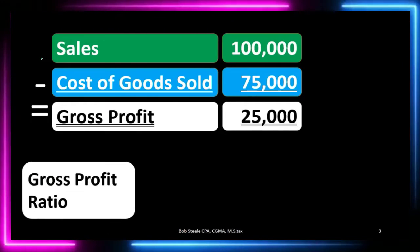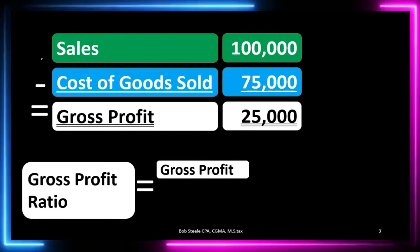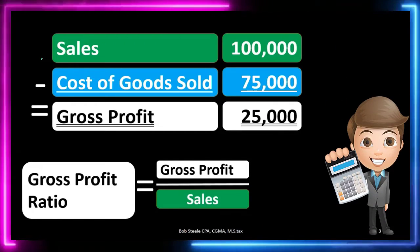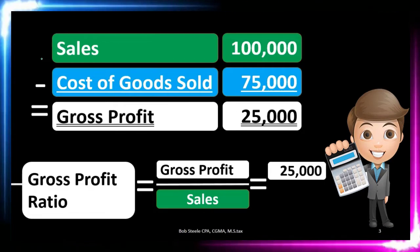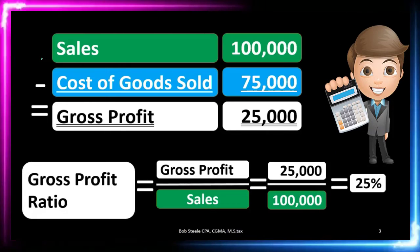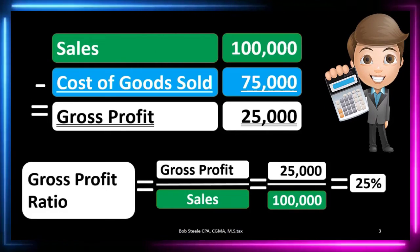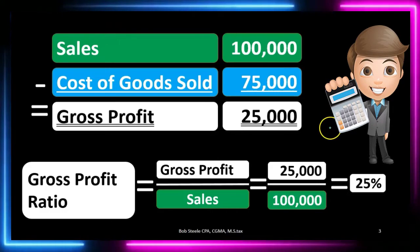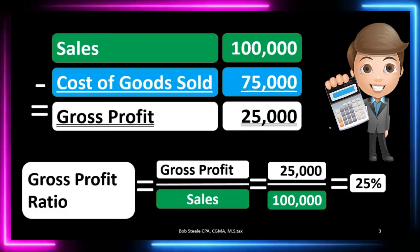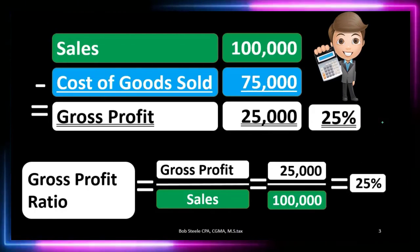We can then calculate the gross profit ratio by taking that gross profit and dividing it by net sales. Taking the numbers, that's $25,000 divided by $100,000, which equals 0.25 or 25%. That means for every dollar of sales, we're keeping $0.25 on the dollar after just the cost of goods sold — often shown as 25% next to gross profit.